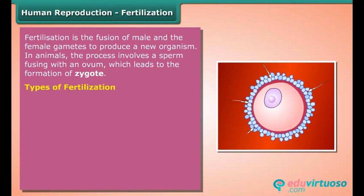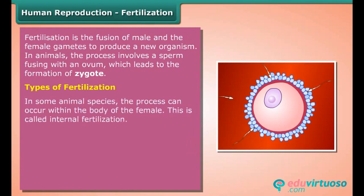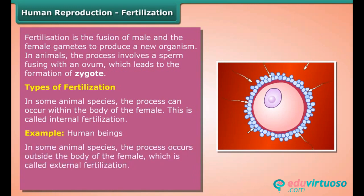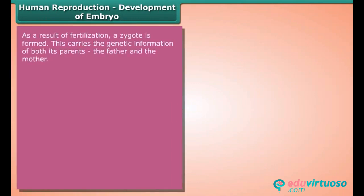There are two types of fertilization. In some animal species the process can occur within the body of the female — this is called internal fertilization, for example in human beings. In some animal species the process occurs outside the body of the female — this is called external fertilization, for example in frogs and fishes.